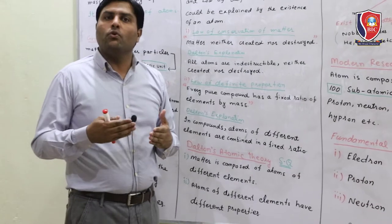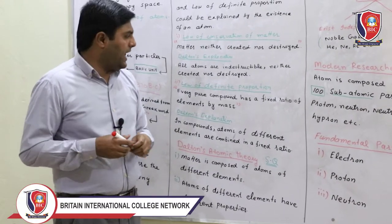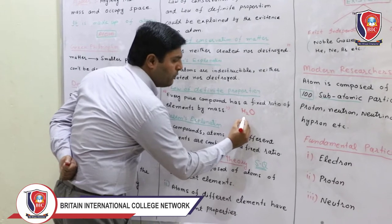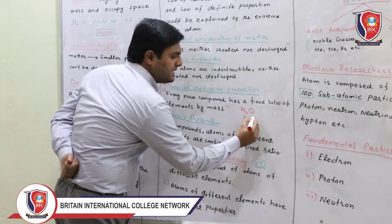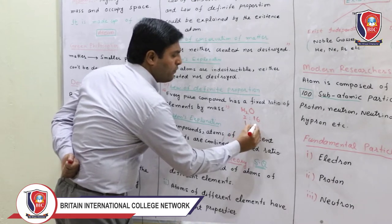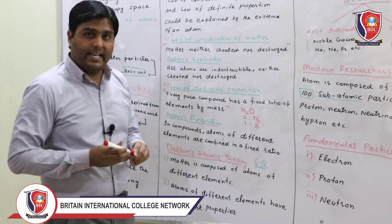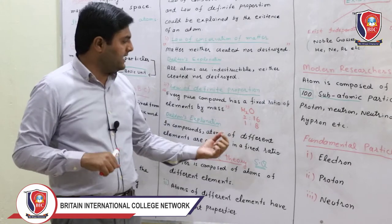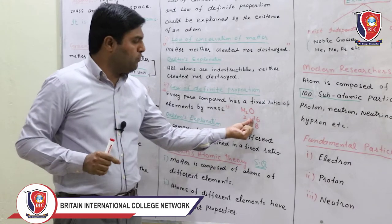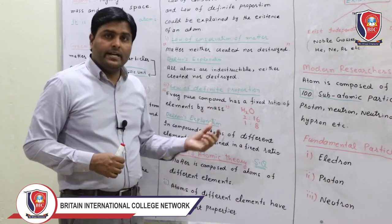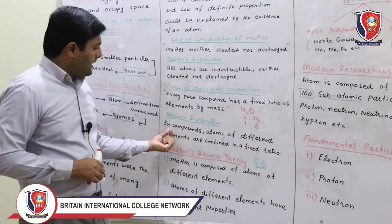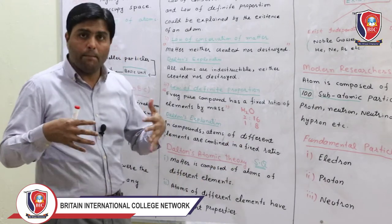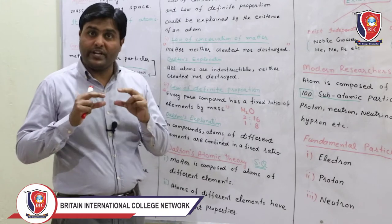For example, if you look at water — H2O. If you look at mass by mass: hydrogen has a mass of 1, so two hydrogens give mass 2, and oxygen has a mass of 16. So the ratio is 2:16 by mass. Wherever you are in the world, you will get H2O with a fixed ratio of 2:16 by mass. Dalton explained that in compounds, atoms of different elements are combined in a fixed ratio.